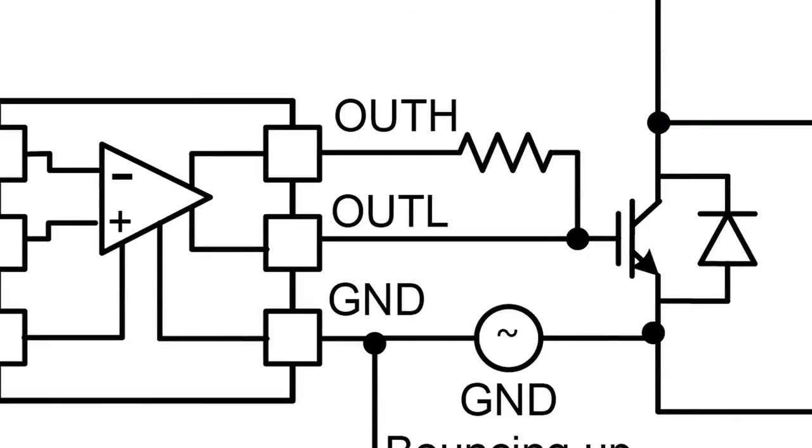The split output, OUT-H and OUT-L, allows the designer to control the turn-on and turn-off speeds of the power switch separately by setting external resistors.